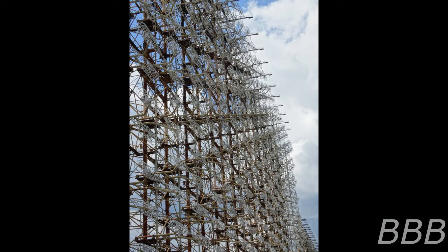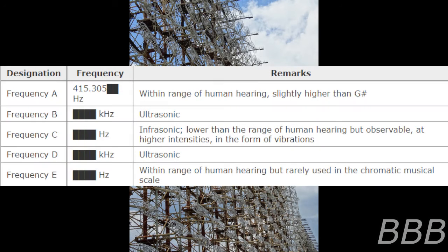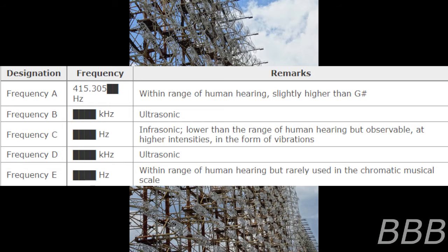The tones of SCP-1012 are frequency A, 415.305 hertz, within range of human hearing, slightly higher than G note. Frequency B, [REDACTED] kilohertz, ultrasonic. Frequency C, [REDACTED] hertz, infrasonic, lower than the range of human hearing but observable at higher intensities in the form of vibrations.